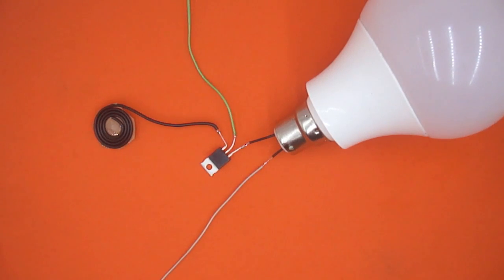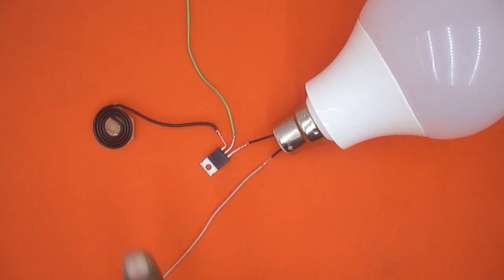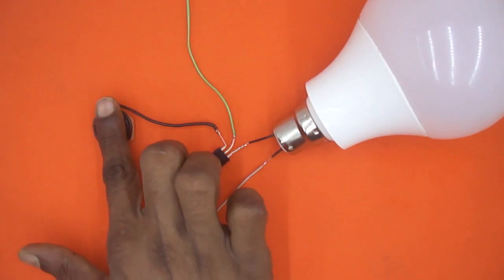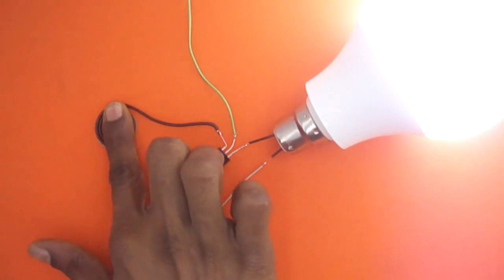Now, I am going to switch on the power supply. When you switch on the power supply, by default, the bulb will not glow. Now, whenever you will touch this wire like this, the bulb will glow.